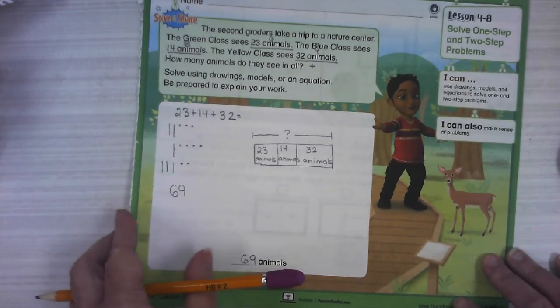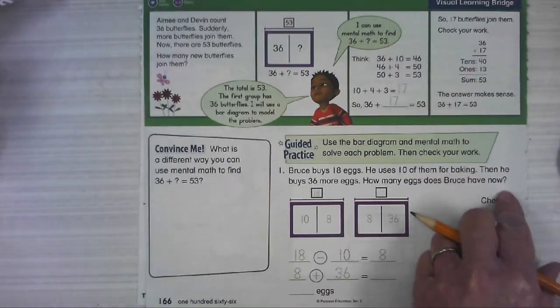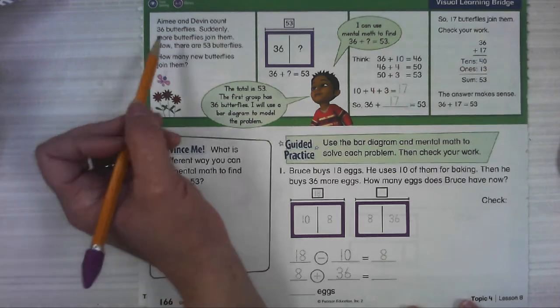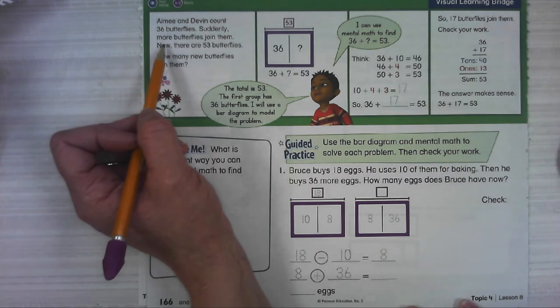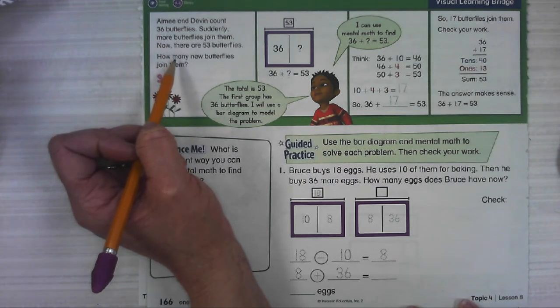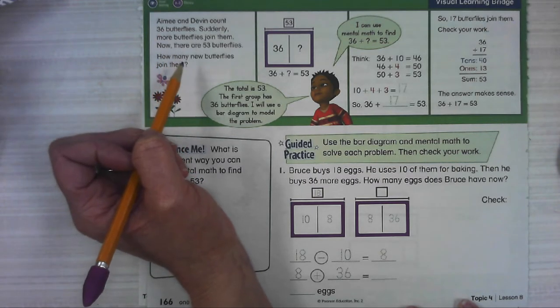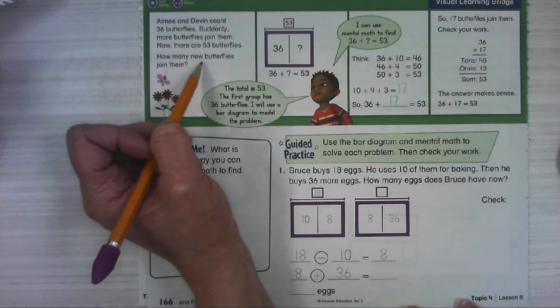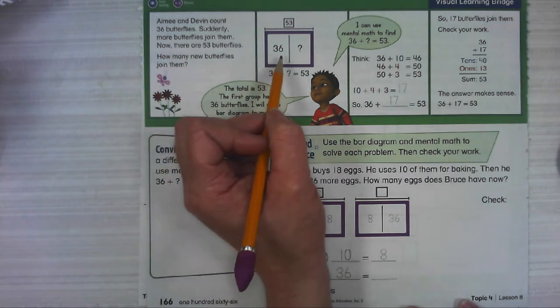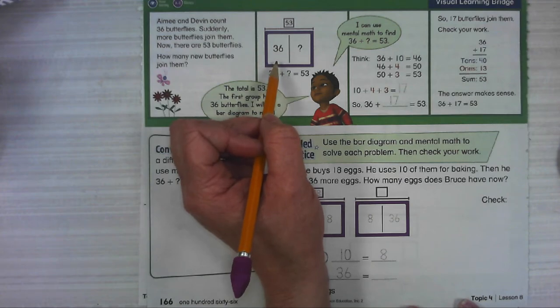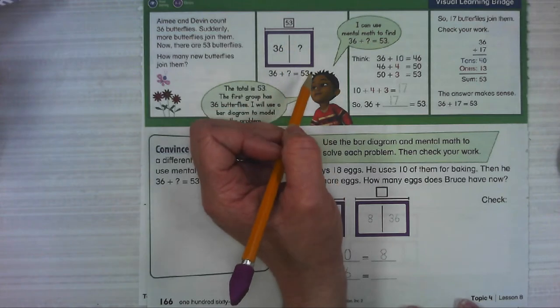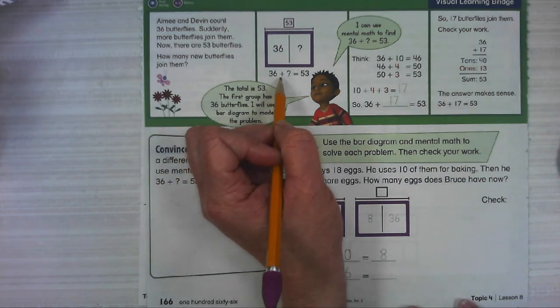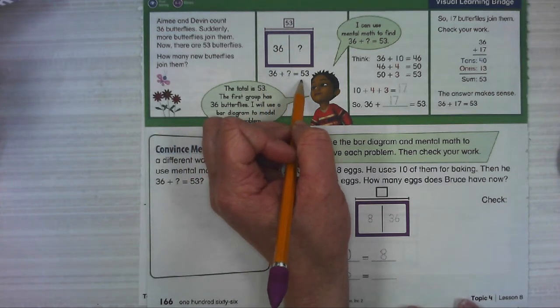Let's do another one. This one is about butterflies. It says, Amy and Devin count 36 butterflies. Suddenly, more butterflies join them. Now there are 53 butterflies. How many new butterflies join them? So they started out with seeing 36. Then some more came, and now all of a sudden there's 53. So 36 plus something equals 53.